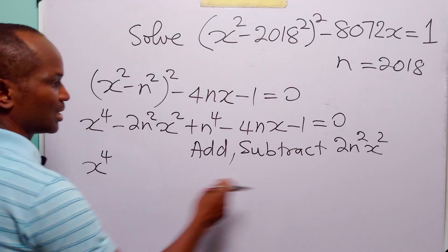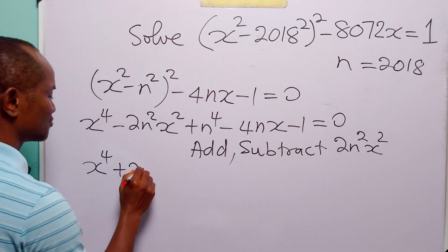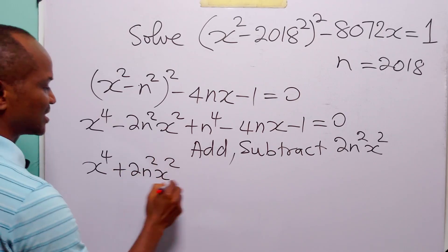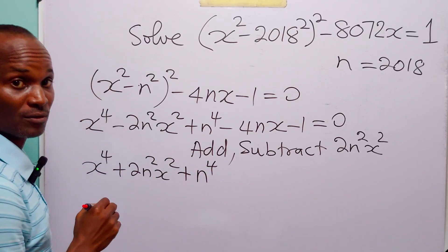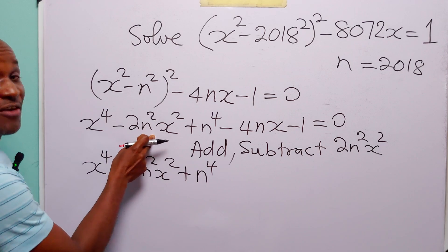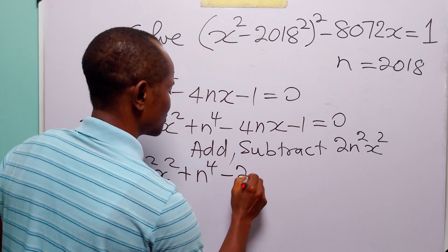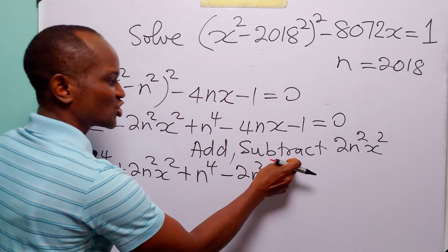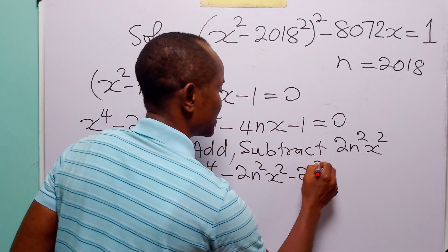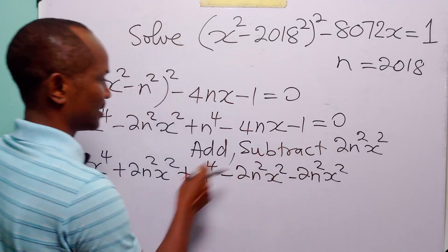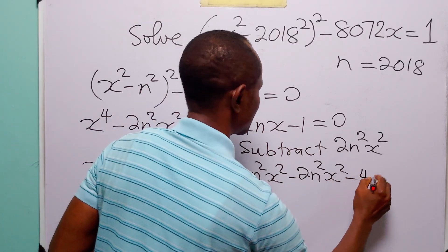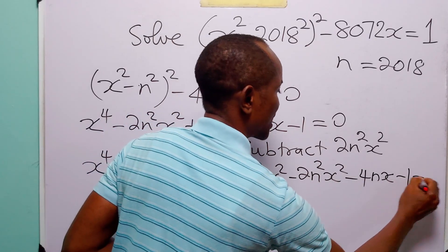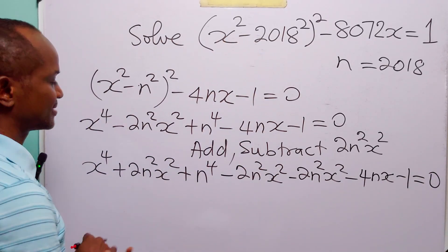We write: x to the power 4, plus 2n²x² (the added term), plus n to the power 4. Then we still have the subtracted term: minus 2n²x², minus 2n²x², and of course minus 4nx, minus 1, all equal to zero.